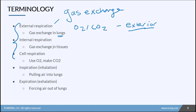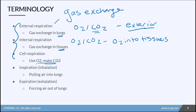Internal respiration is the exchange of gases in the tissue. It's an oxygen-carbon dioxide exchange, but this time it's happening inside — we're actually putting oxygen into the tissues and pulling CO2 out so it can circulate back to the lungs to do the external respiration part. Cell respiration still involves oxygen and carbon dioxide exchange, but what's happening is the cells are actually using the oxygen and in that process they are making CO2.